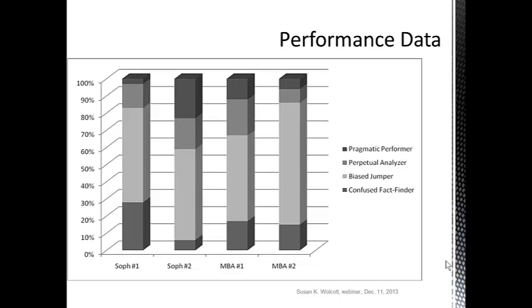The next higher area in the bar is the lighter colored area, representing the proportion of students operating as a biased jumper. You will notice that this is the largest group in all four classrooms, especially the MBA classroom on the far right. The next higher area in a medium color represents the proportion of students operating as perpetual analyzers, and then the very top dark color represents the pragmatic performers. In these four classrooms, none of the students were operating as strategic revisioners.